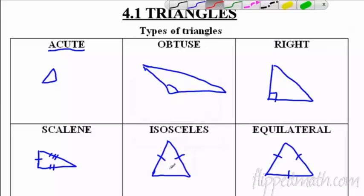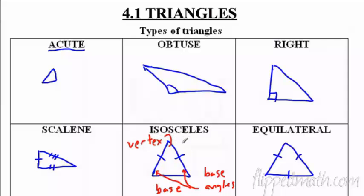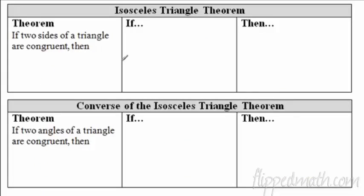In an isosceles triangle, the side that doesn't match is called the base — it's the base of the triangle. So when we look at this, if this is the base, we have what are called base angles. This is a base angle here, and these are the base angles. The top point is called the vertex, so we also have the vertex angle — it's this angle right here on top.